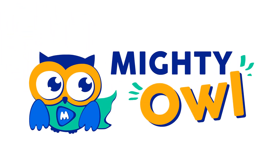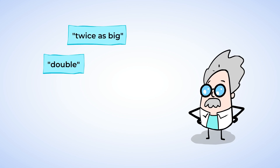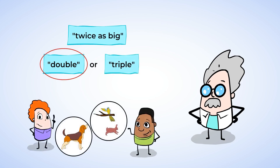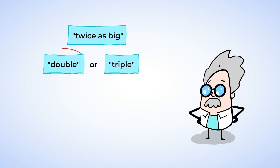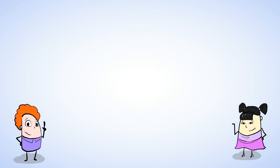Hello, this is Mighty Owl. Have you ever heard of things being compared as twice as big? What about the word double or triple? For example, John has double the amount of pets that Jake has. Or Ashley got triple the points that Daisy got on her math test. Sally has twice as many toys as Fred.